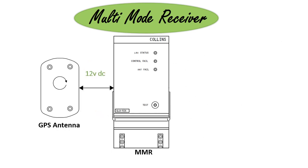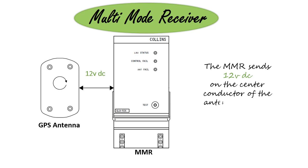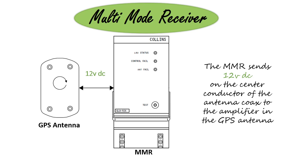The power supply makes various AC voltages from the 115-volt AC input to the multi-mode receiver. The MMR sends 12-volt DC on the center conductor of the antenna coax to the amplifier in the GPS antenna.